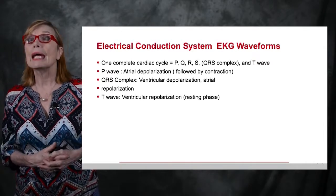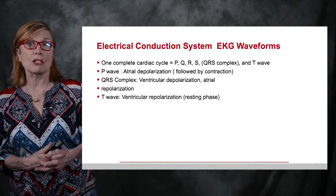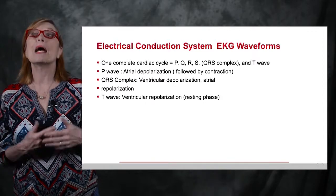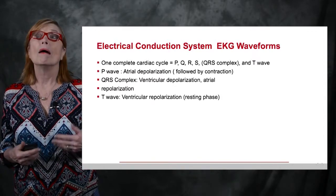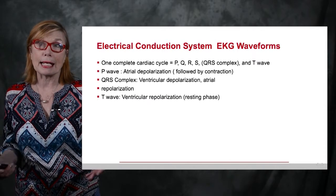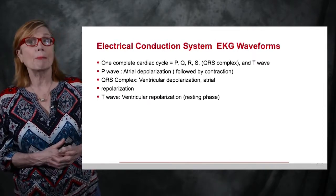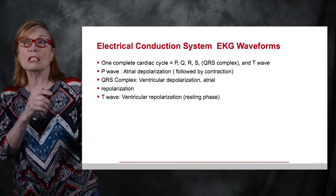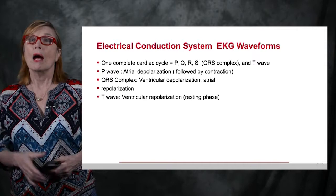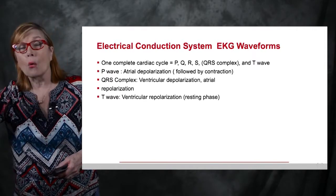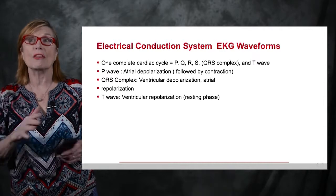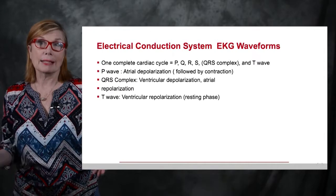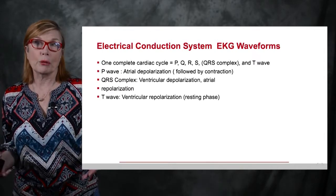The T wave is the ventricular repolarization, which marks the beginning of mechanical relaxation or the resting phase. The P wave causes atrial contraction; the QRS causes ventricular contraction. From the T wave to the next QRS — called the TP interval or TQRS interval — is the time the ventricle is allowed to fill with blood.